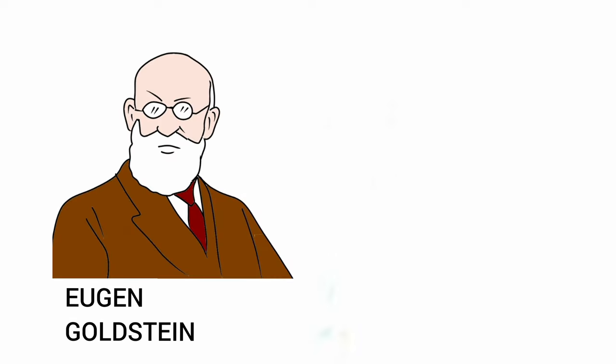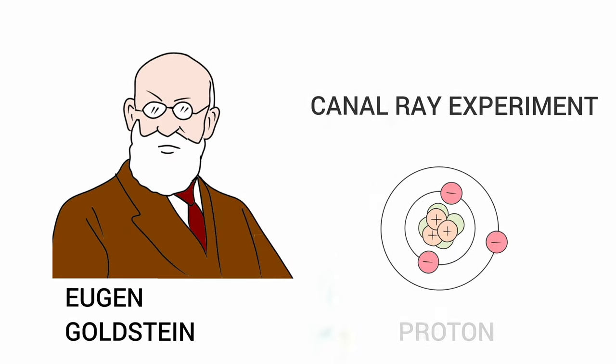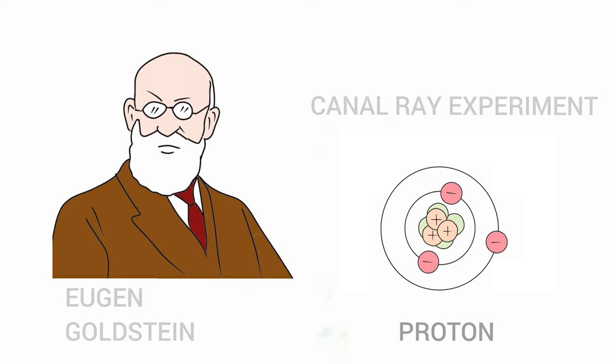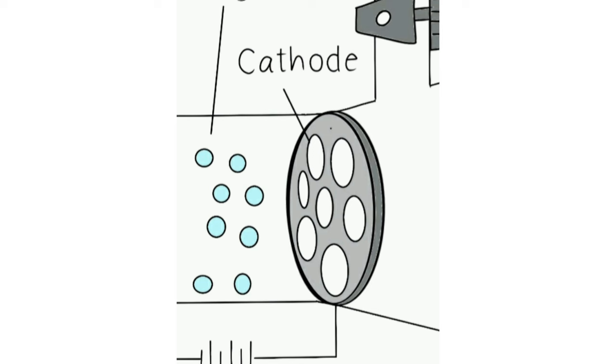In 1886, Eugene Goldstein performed an experiment known as the Canal Ray Experiment, which led to the discovery of protons. This experiment is similar to the cathode ray experiment. The difference is that instead of making a hole in the anode, holes are made in the cathode.